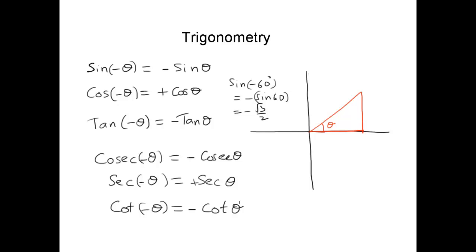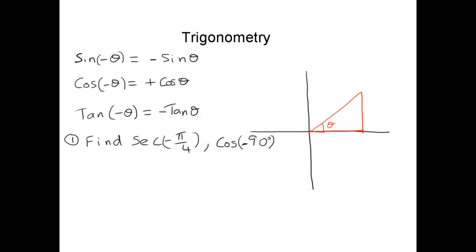Right. Now let's do a few examples on these lines. So the question states, find secant minus pi by 4 and cos minus 90. Okay. Let's first find secant minus pi by 4.